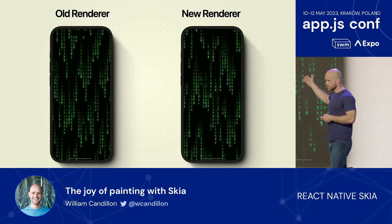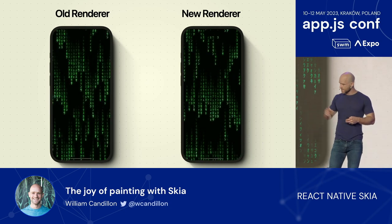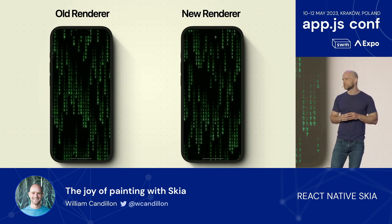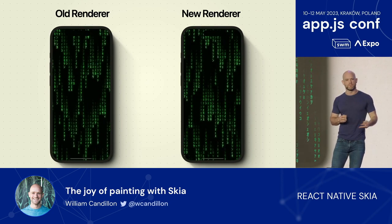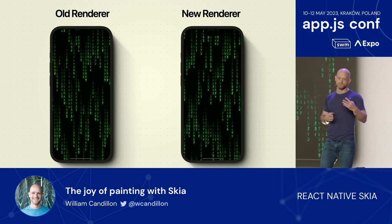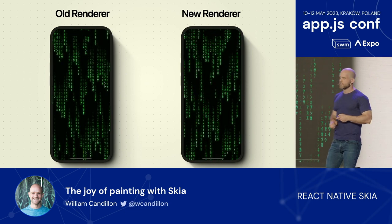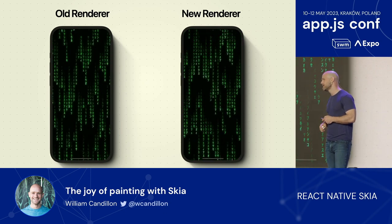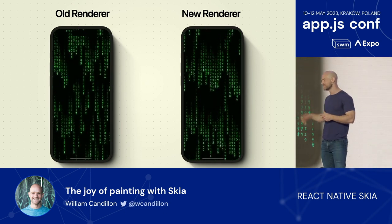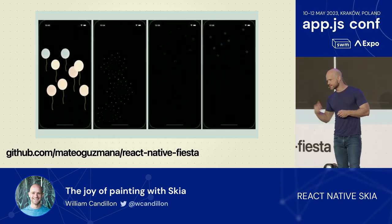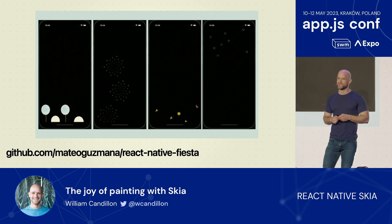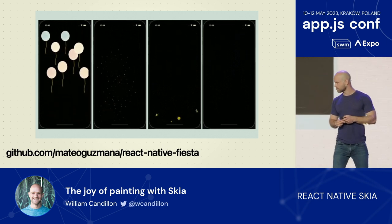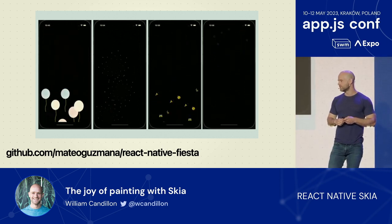Here's an example. On the left is the old Skia renderer — every second, we were allocating around 3,000 JSI objects. These are Skia objects that need to be memory managed by JavaScript, and at that scale things start to be a bit slow. But now in the new renderer, things are much, much faster, and it's all rendered on the UI thread. There is a really fun package that takes advantage of this new renderer — it's Fiesta from Matteo Guzman — it needs to display a lot of drawing commands, elements, and animate them.